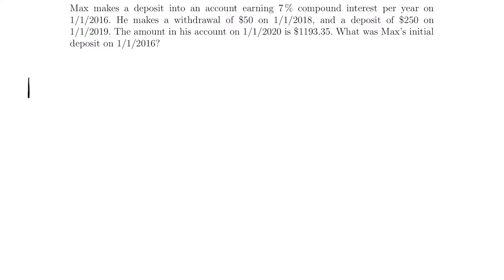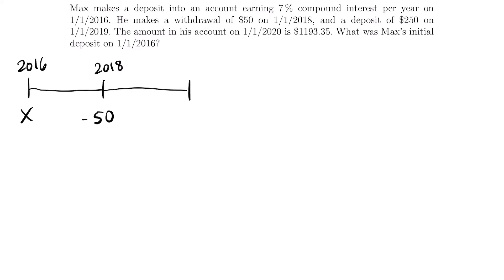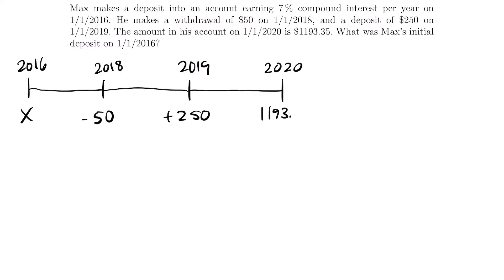Let's start with our first transaction, a deposit made in 2016. We're not told what the amount is, so I'm going to write x — we'll solve for that later. Our next transaction is in 2018, where we are withdrawing $50, so we subtract 50. Then in 2019, we are depositing $250, so plus $250. And we are told that the amount in the account at the beginning of 2020 is $1,193.35.